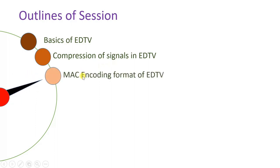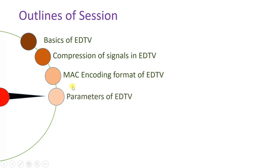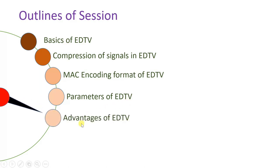After that I will explain the MAC encoding format which is there in EDTV. Here we do compression of signal in EDTV and that compression is encoded in MAC format — multiplex analog compression. After that I will explain parameters of EDTV, and then I will conclude this session by explaining advantages of EDTV.